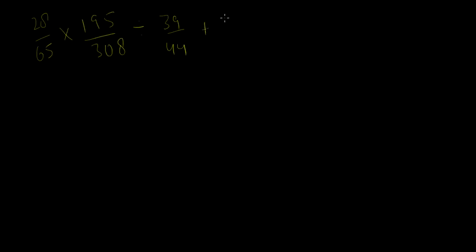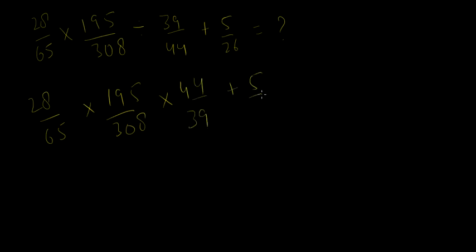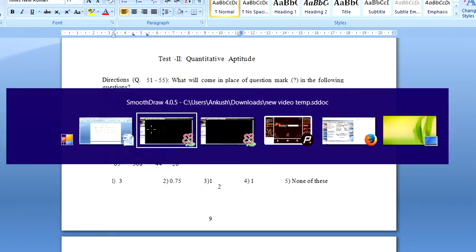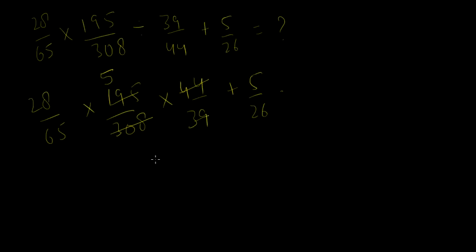Then 28 divided by 65 into 195 by 308 into 44 by 39 plus 5 by 26. So 39 and this is 5, and 44 and 308 is 9 7, then again 45 and 65 is 13, and 7 and 28 is 4. So this would be 4 by 13 plus 5 by 26.